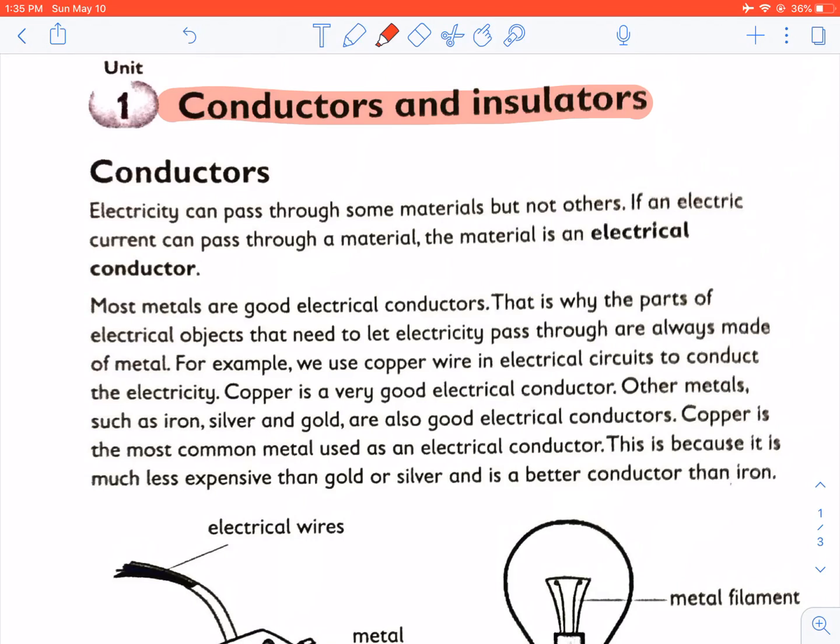Mains electricity is electricity that flows from power stations to our homes. A cell is a scientific name for a battery. Many cells put together give us a battery of cells.